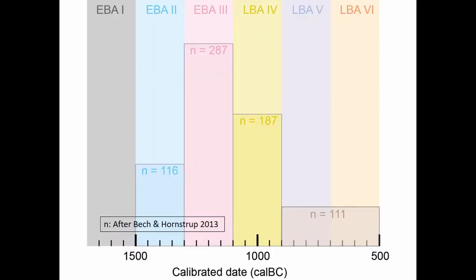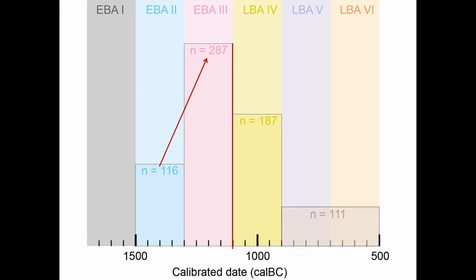For many years, the number of burials from the Bronze Age of Thy and Mors has been known to show a marked rise from Middle Bronze Age period two to three. More recent results demonstrate an almost similar decline in the Late Bronze Age, the beginning of which is here marked with a fat red line. The important transformations in burial rites from the Middle to the Late Bronze Age are, first of all, a marked rise in the use of urn graves and the end of barrow building. Use of cremations started some hundred years earlier than the beginning of the Late Bronze Age.